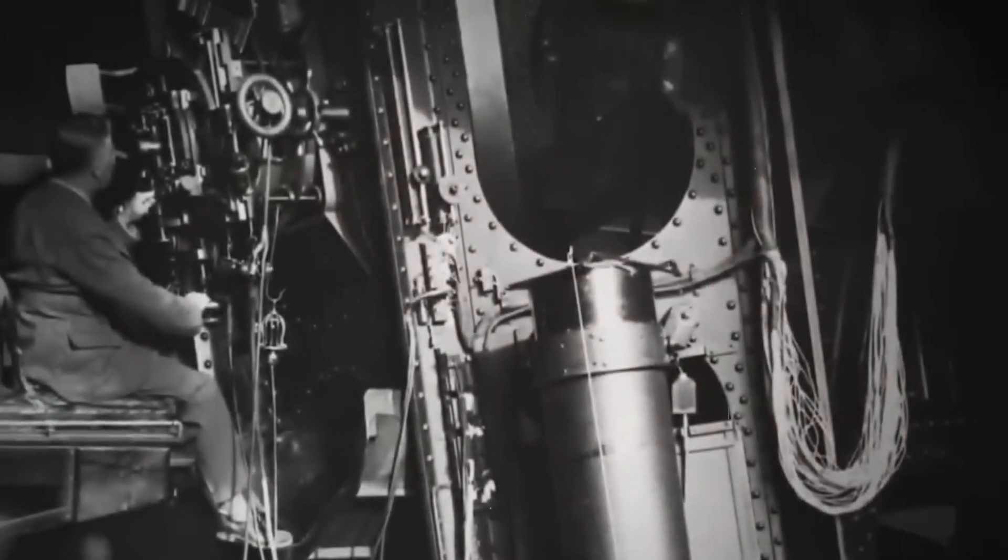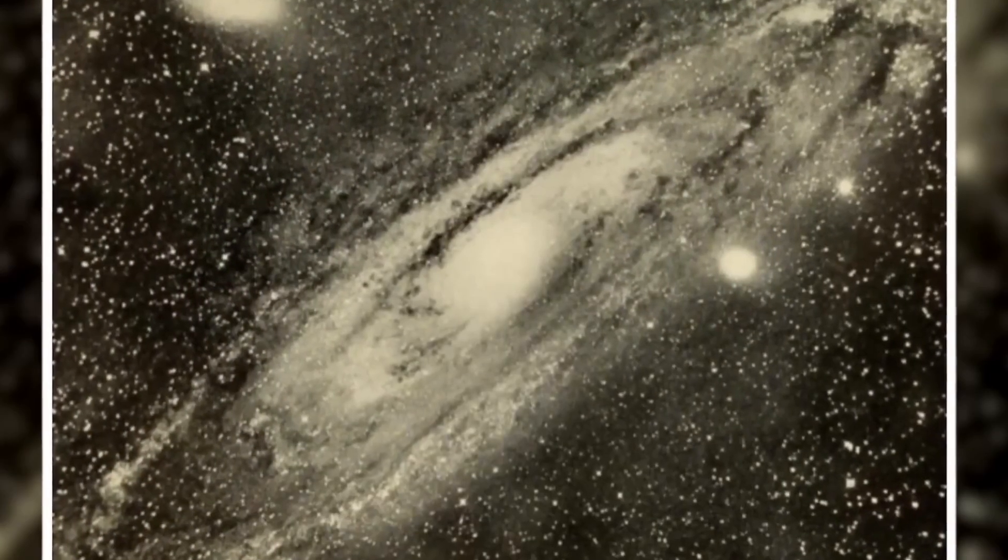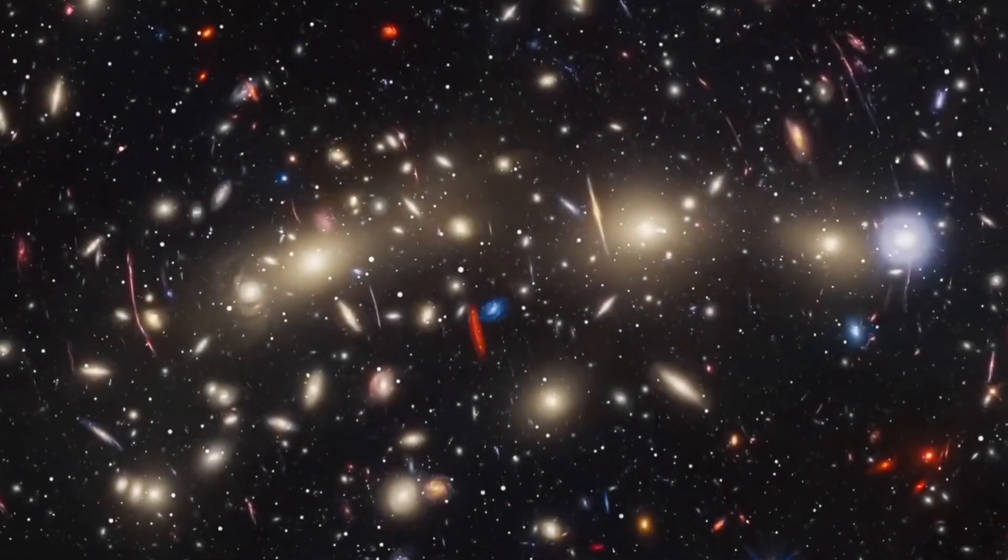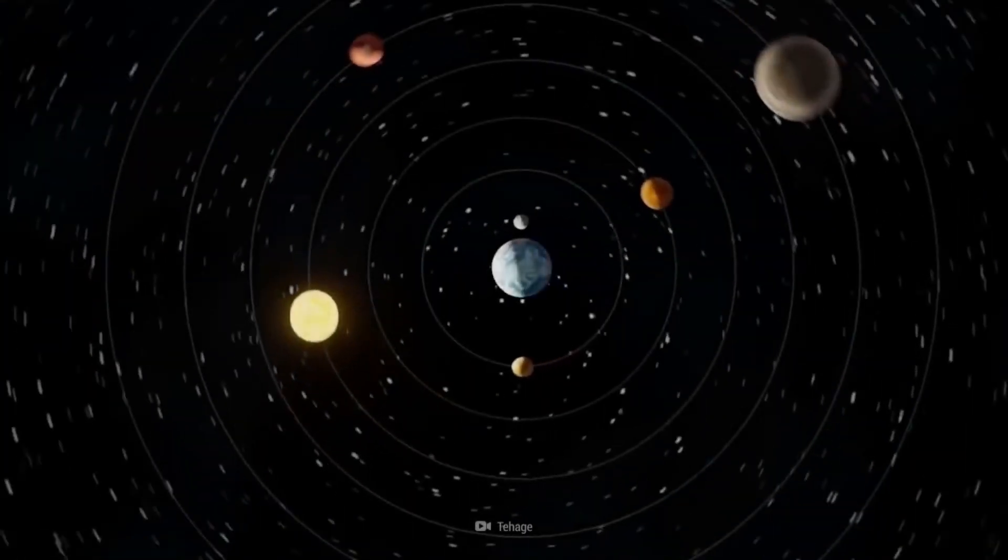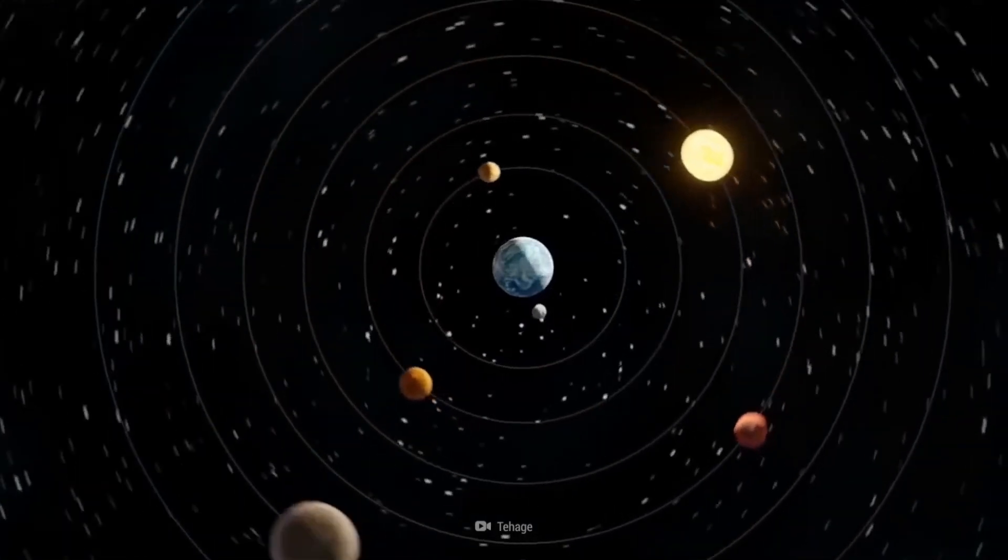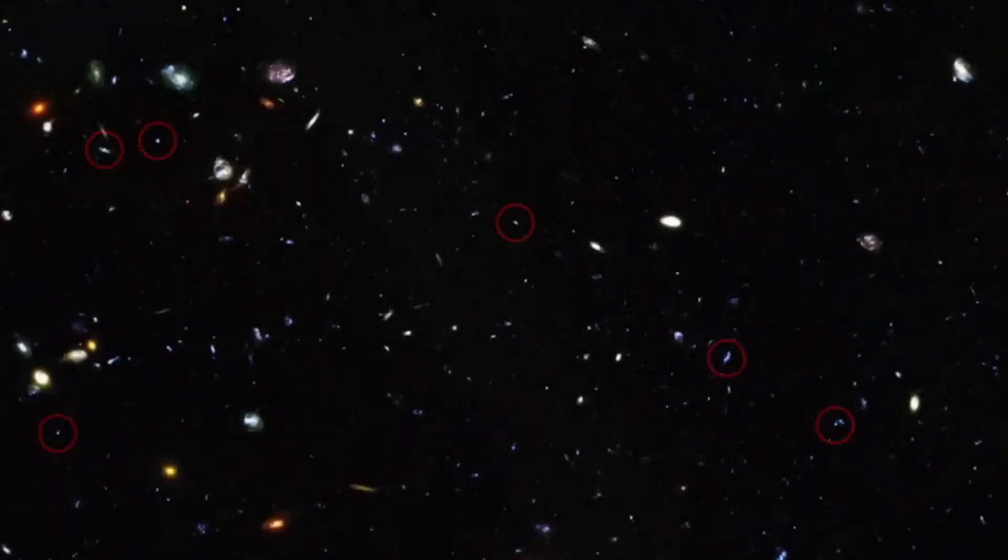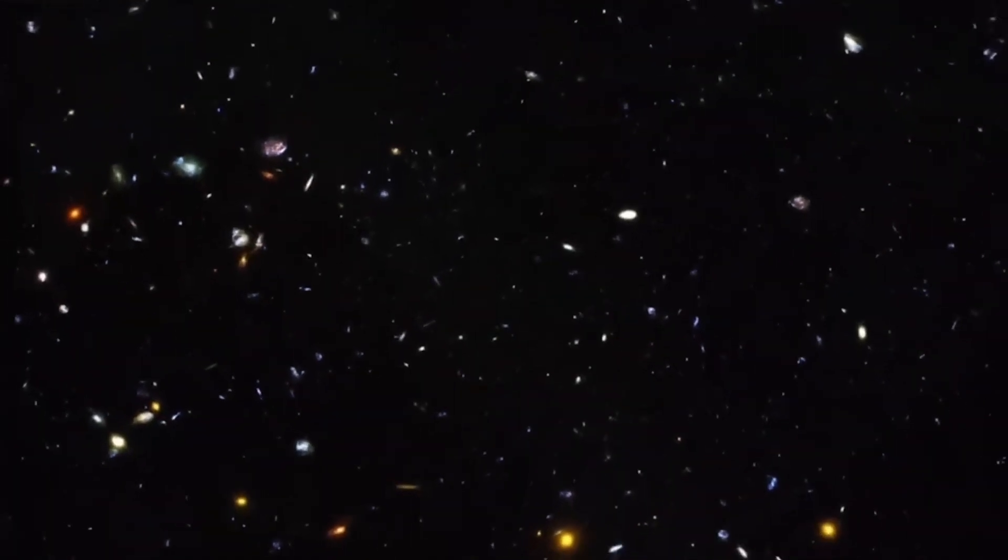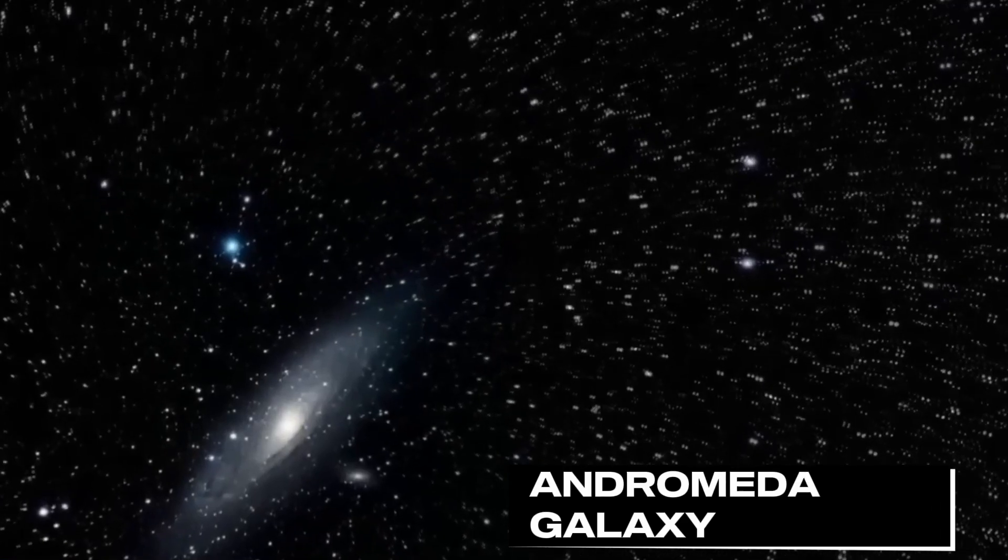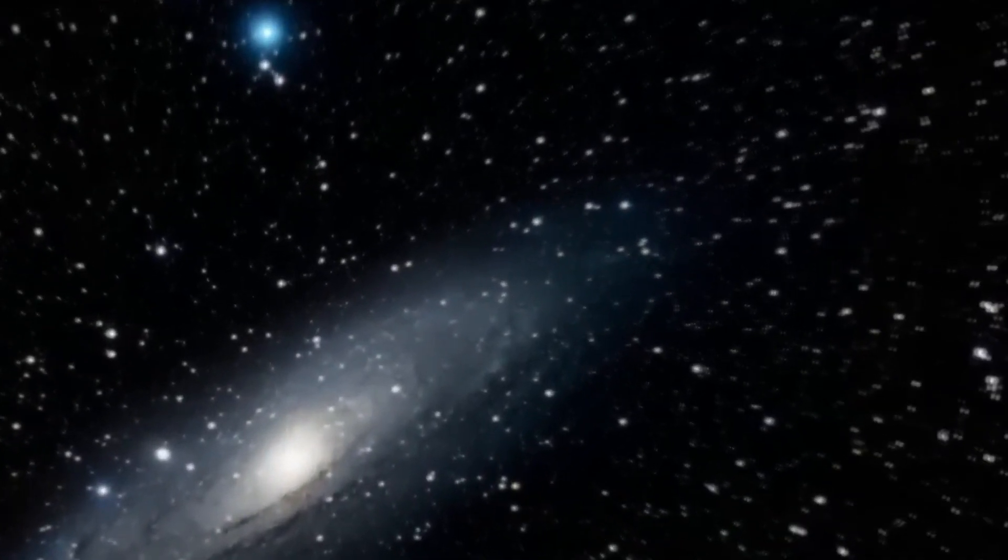When scientists first studied distant galaxies in the 1920s, they made a surprising discovery. They observed that most galaxies are moving away from us. Initially, this led some to speculate that Earth might be at the center of the universe. However, further observations showed that while most galaxies are receding, some, like the Andromeda Galaxy, are moving toward us. This seemed puzzling at the time.